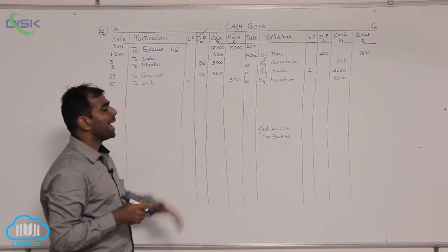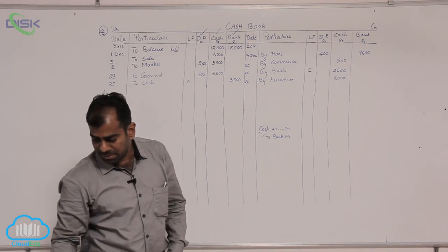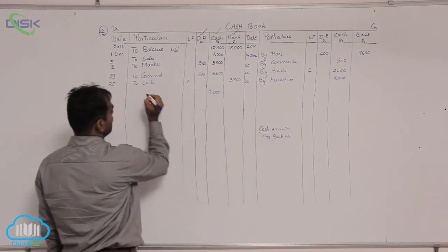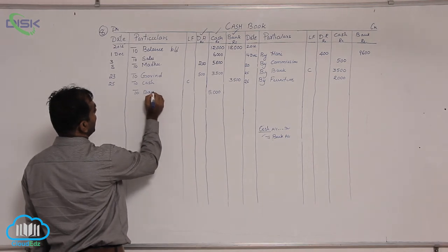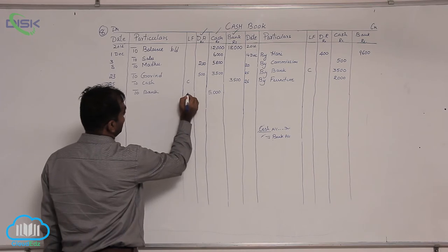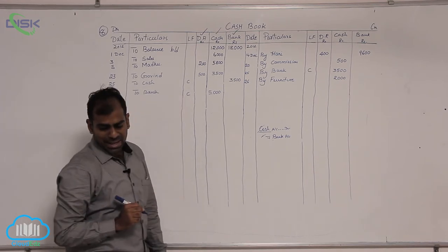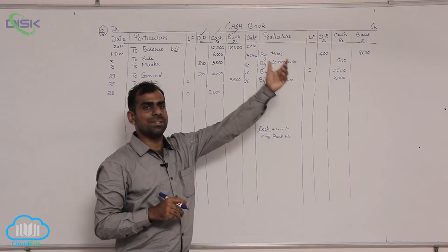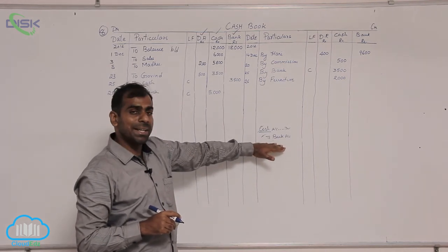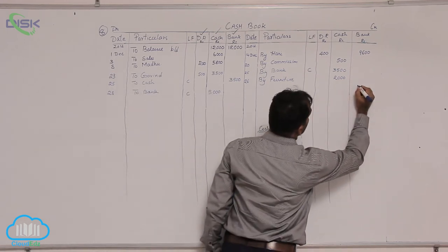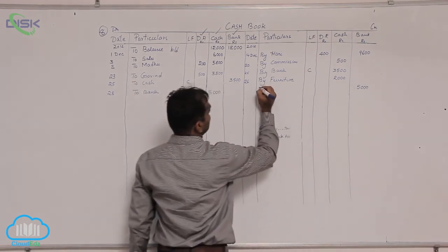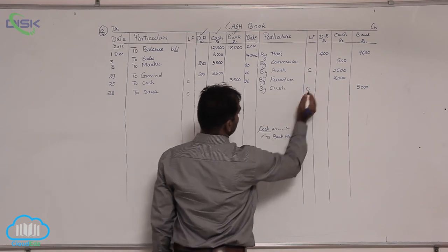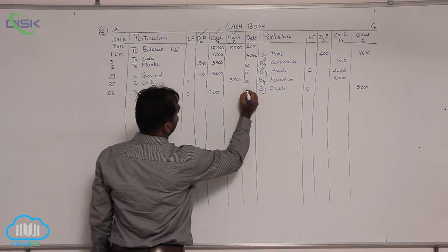Cash we have to debit, so on the debit side enter the amount in the cash column — the amount being 5000. The reason is bank is the giver, so I am writing 'to bank'. Also, since it is a contra entry because cash and bank are involved, I am writing C in the LF column, and the date 28th. Since bank is also involved it is a contra entry, we should record on the other side also — the bank should be credited. So on the credit side in the bank column enter the amount 5000. The reason is cash, so write 'by cash' in the particulars column. It is a contra entry, so C in the LF column, the date being 28th December.